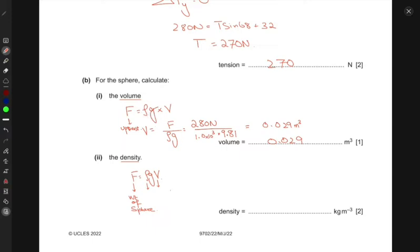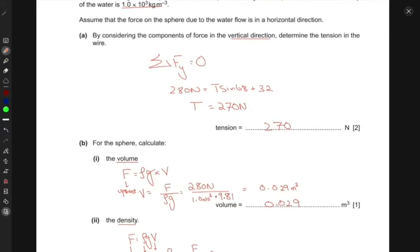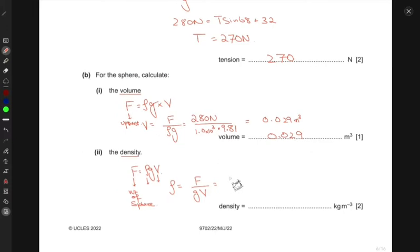So if you rearrange this, this gives you F by G times V. And the weight of the rock or this sphere is 32 divided by 9.81 into 0.029. So this gives you the density as 1.0 kilograms per meter cube.